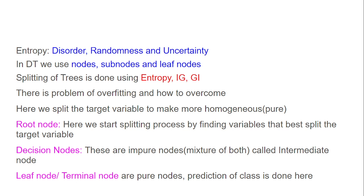Entropy is a measure of disorder, randomness, and uncertainty. In the decision tree, we use nodes, subnodes, and leaf nodes. The splitting of the tree is done using entropy, information gain, and Gini index. There is also the problem of overfitting and we should think about how to overcome that.